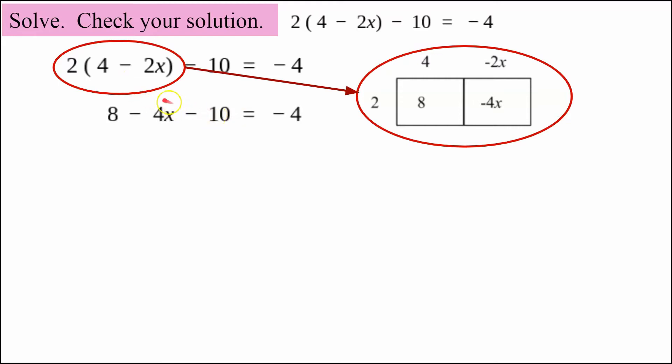So I'm going to transfer this 8 minus 4x right here. I got that from distributing 2 times 4, 2 times negative 2x. And we still have our subtract 10 equals negative 4.